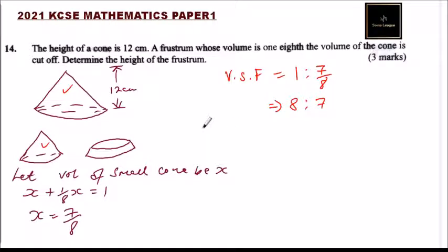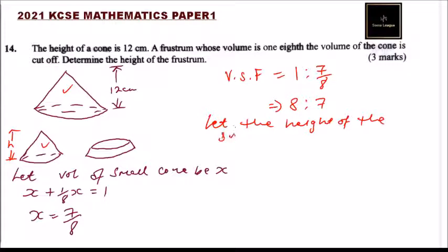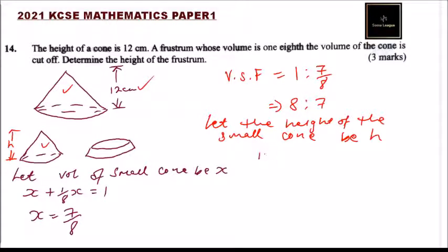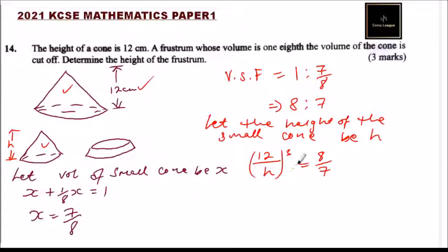Let the height of the small cone be h. Since the volume scale factor equals the linear scale factor cubed, we have the height of the whole cone divided by the height of the small cone, all cubed, equals the volume scale factor, which we have said is eight over seven.